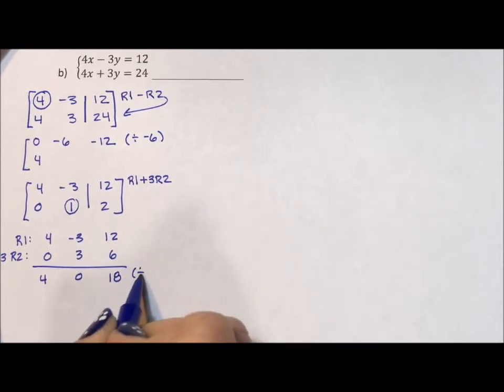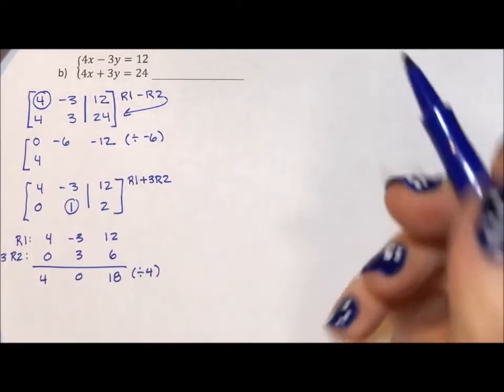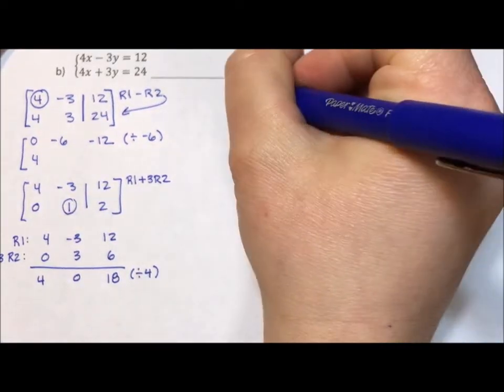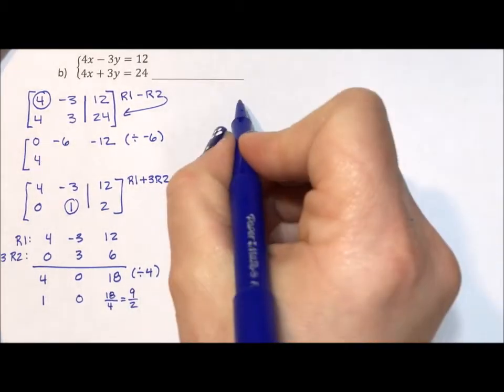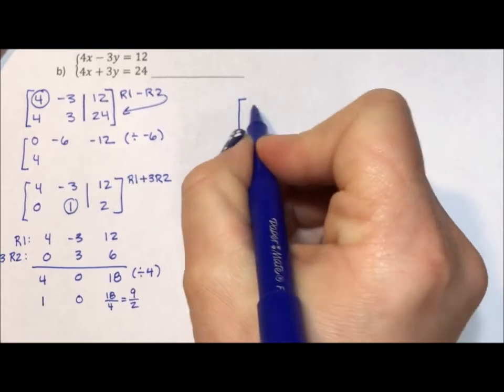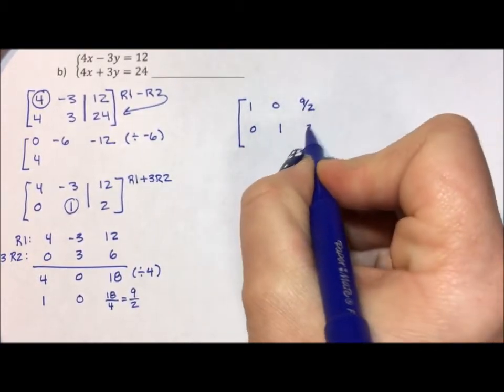Then I'm going to divide by 4 because I need to make sure that the matrix on the left is an identity matrix. When I divide by 4, this becomes 1, this becomes 0, this becomes 18 over 4, which reduces to 9 halves. I'll leave it as 9 halves. That's perfectly acceptable. So I have 1, 0, 9 halves, 0, 1, 2.